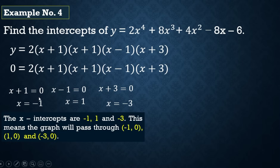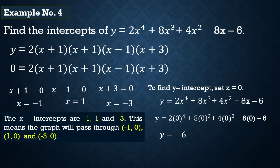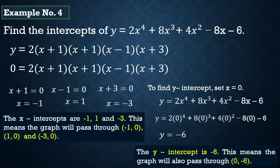And x + 3 = 0 gives x = -3. So tatlo lang yung x-intercepts natin kasi yung (x + 1) ay may multiplicity — dalawa sila pero iisa lang ang x-intercept value nito. Therefore, the x-intercepts are -1, 1, and -3. This means that the graph will pass through (-1, 0), (1, 0), and (-3, 0). To find the y-intercept, set x = 0: y = -16... the y-intercept is -6. The graph will also pass through (0, -6).